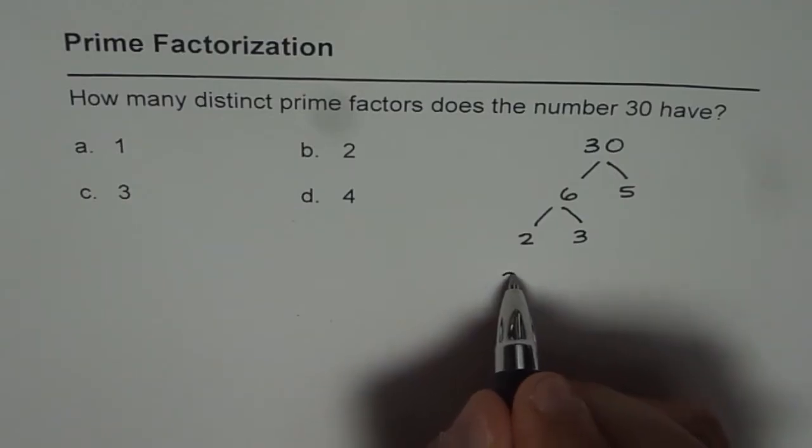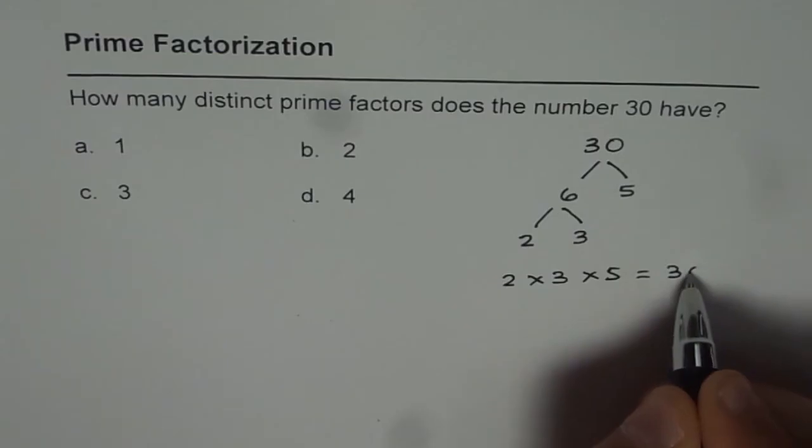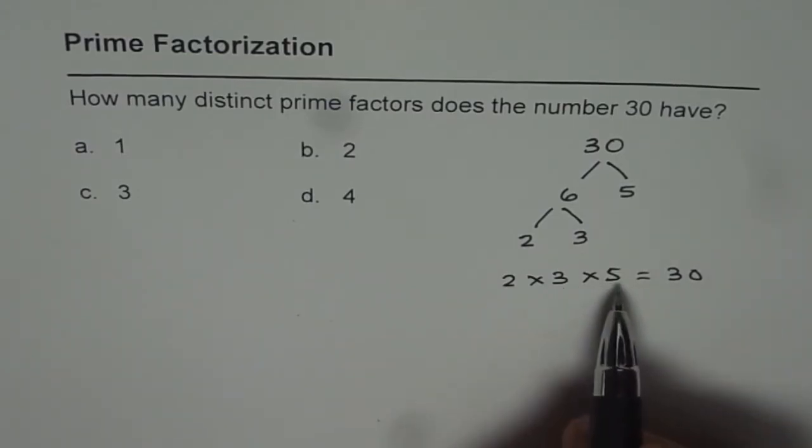30 could be written as 2 times 3 times 5, and that is 30. So it has 1, 2, 3 distinct factors—all are different.